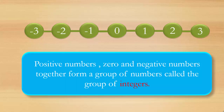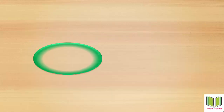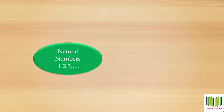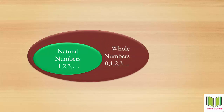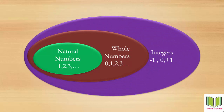For natural numbers, we begin with one, then two, three, and so on. Whole numbers form a bigger set than natural numbers, beginning with zero and including all the natural numbers. Integers form an even bigger set than whole numbers and natural numbers — integers include positive numbers, zero, and all the negative numbers.